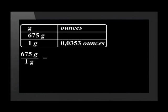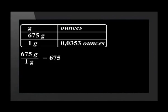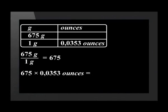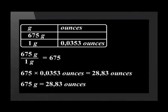We divide values in the same column. This means that we divide 675 grams by 1. The answer is 675. Now, we multiply the answer to the division by the rest of the conversion factor. In this case, the rest of the conversion factor is 0,0353. So, we multiply 675 by 0,0353. The answer is 28,83 ounces. This means that 675 grams is equal to 28,83 ounces.